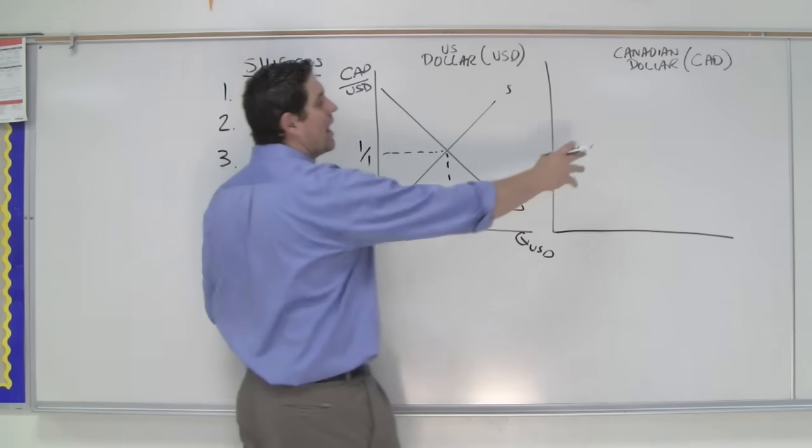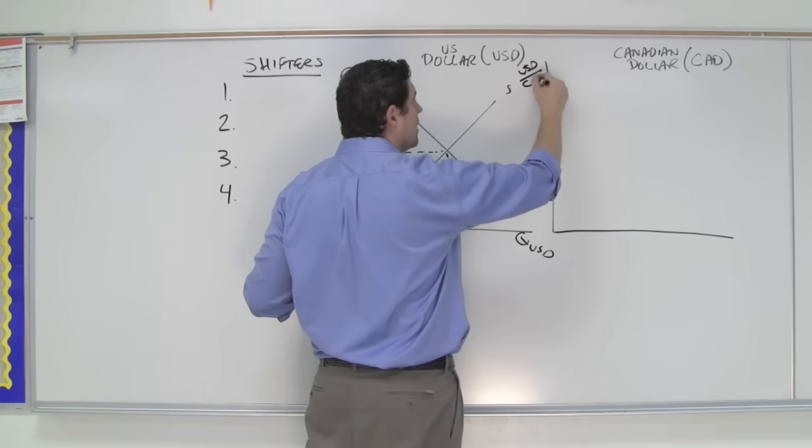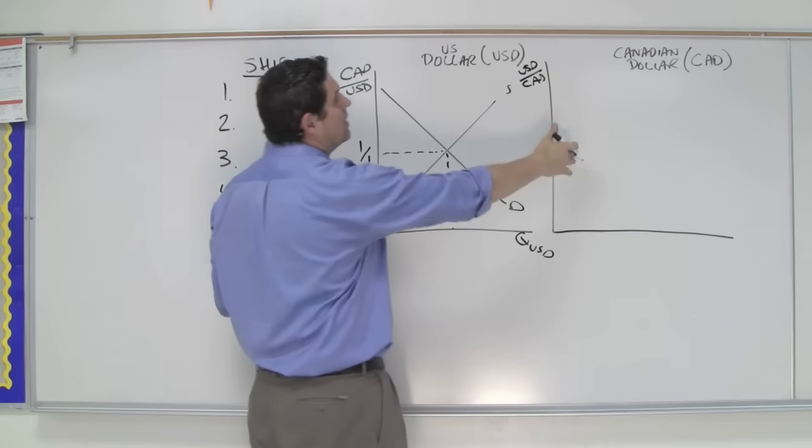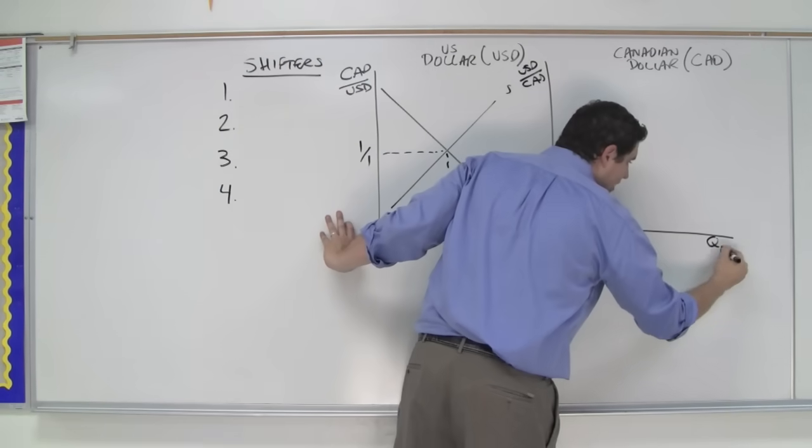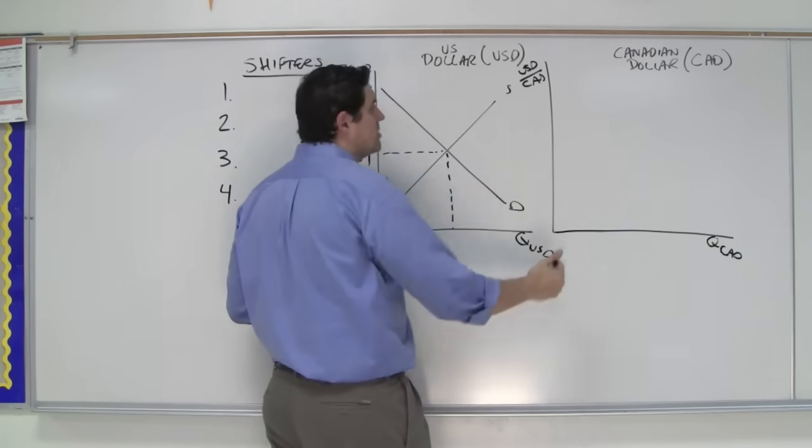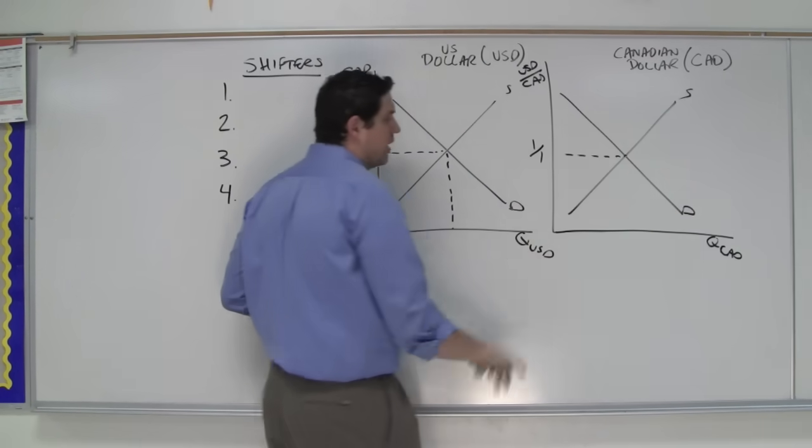On the other side, we're going to analyze the Canadian dollar. So up here, it's going to be the US dollar divided by the Canadian dollar. The value of the Canadian dollar is how many US dollars you get for it. Down here is the quantity of Canadian dollars available in the foreign exchange market. Here's the demand. Here's the supply. Exchange rate, what's going to be? One-to-one relationship. That's the idea.